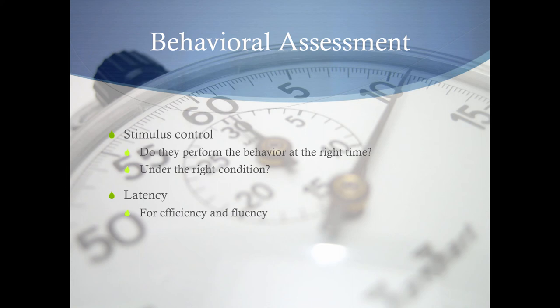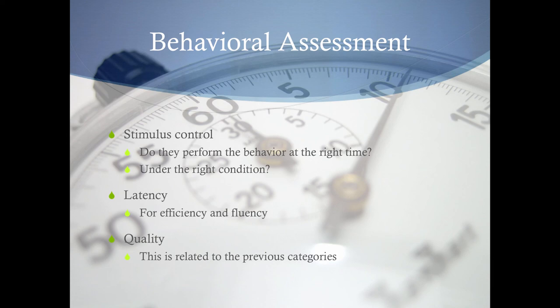If somebody hits me and then the time it takes for me to hit them back - that's latency. Quality is how well the behavior is done - it's related to all the previous categories. Quality is this composite: you have the appropriate latency, the appropriate topography, you performed it at the right rate and under the right conditions. Quality is an arbitrary thing that you use all these other features of behavior to create.